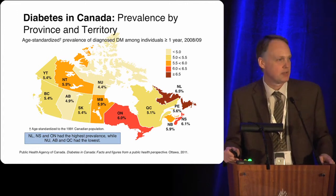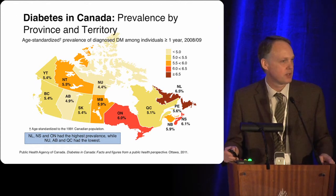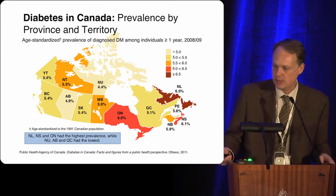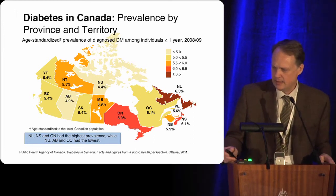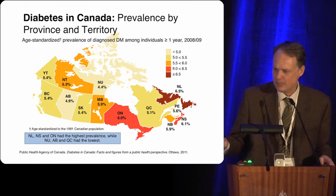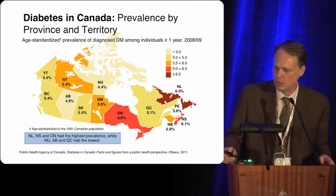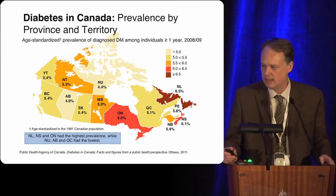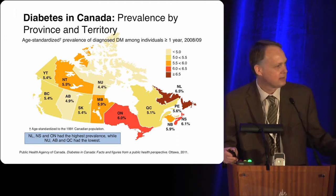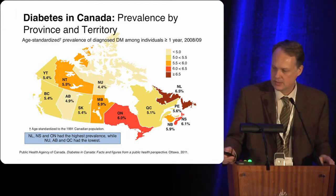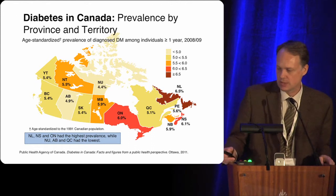This illustrates the prevalence of diabetes — 2009 data — across the country. You can see that the prevalence varies depending on the province. BC happens to be somewhere in the middle. Ontario and Newfoundland are at the top end at over 6%, while Nunavut and Alberta appear to be at the lower end, although some of these statistics are hard to compare directly across provinces.